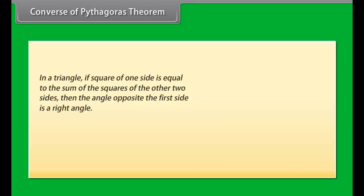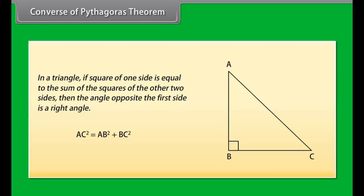Converse of Pythagoras theorem: In a triangle, if the square of one side is equal to the sum of the squares of the other two sides, then the angle opposite the first side is a right angle.